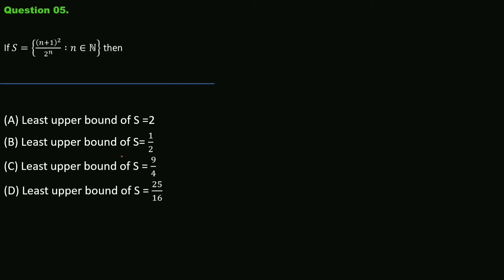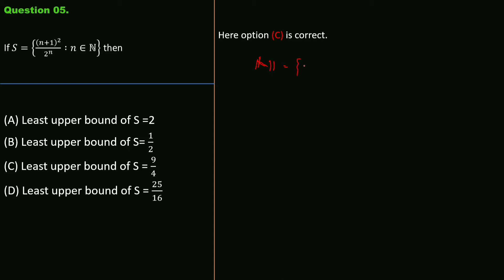Question number 5: given the set S = {(n+1)²/2ⁿ : n ∈ ℕ}, which statement is true? Options: lub(S) = 2; lub(S) = 1/2; lub(S) = 9/4; lub(S) = 25/16. Option C is correct. The natural numbers are {1, 2, 3, 4, ...}, so let us substitute values of n.